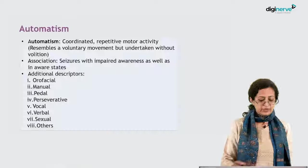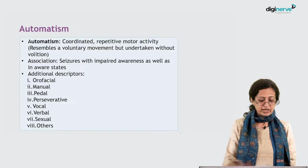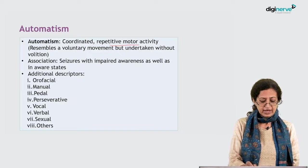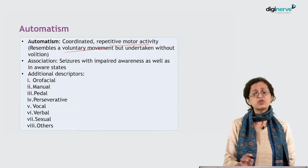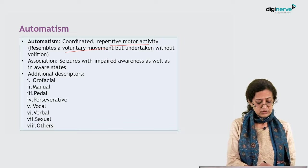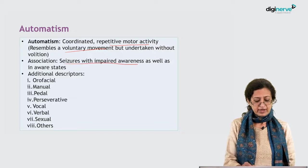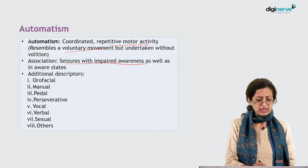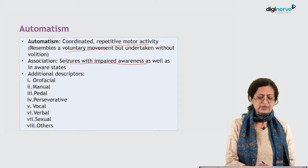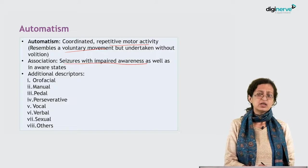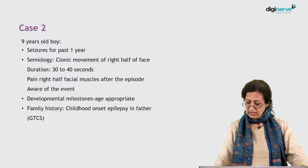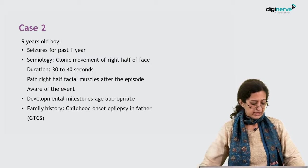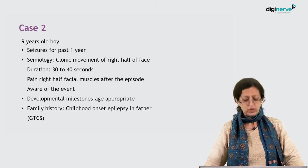From the child's video, the features are focal onset with impaired awareness, automatisms, and behavioral arrest. An automatism is a coordinated, repetitive motor activity resembling a voluntary movement but undertaken without volition. It is associated with seizures with impaired awareness as well as aware states, with additional descriptors including orofacial, manual, fiddle, perseverative, vocal, verbal, sexual, and others.